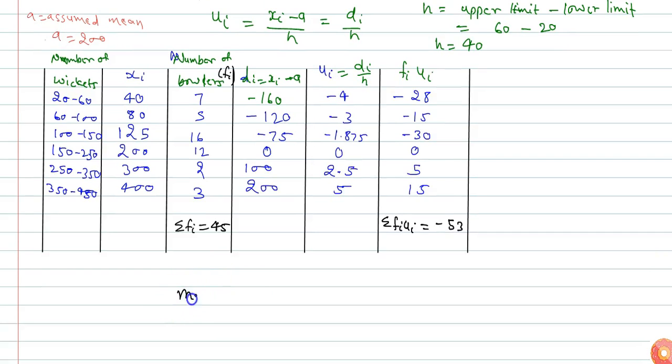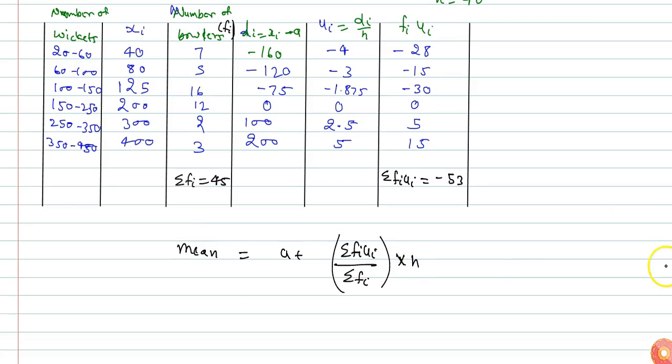Mean is given by a plus summation fi ui divided by summation fi, multiplied by h.